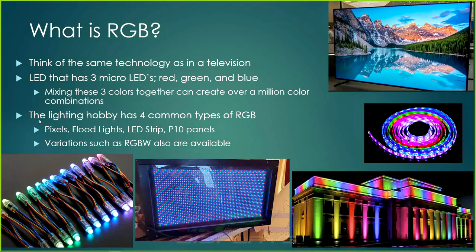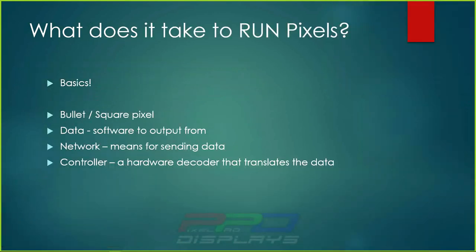There are variations with pixels — some are a little more advanced, such as RGBW. We're used to RGB — red, green, blue — but some are RGBW, four-channel, where they have a white channel you can activate directly instead of having to activate R, G, and B together to create white. The most common type we use are bullet or square node pixels, and they are typically RGB.